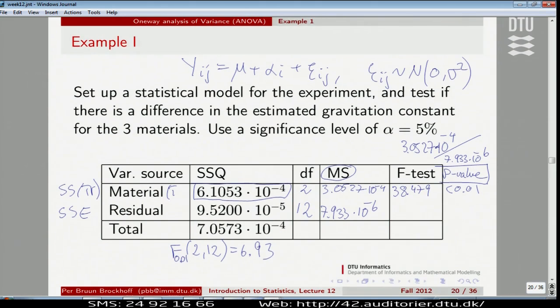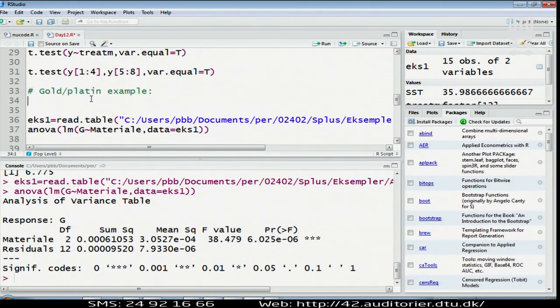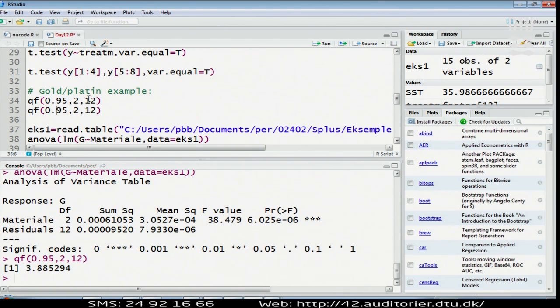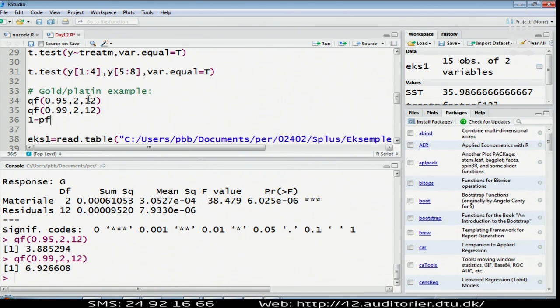Let us jump to R to do it more exactly. Let me say I could start out by doing 2,12 to find the critical value of 95%, that was 3.88. What about the critical value corresponding to 1%? That is 99. That was the 6.93 that I just saw on the table. So these are the tabulated values. How about p-value? Well, let's see what is the probability of going beyond 38.48 here.